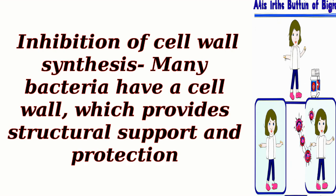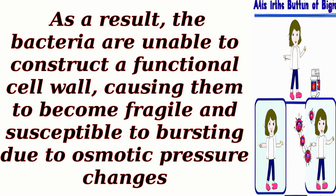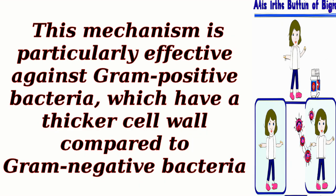Inhibition of Cell Wall Synthesis: Many bacteria have a cell wall, which provides structural support and protection. Antibiotics like penicillin and cephalosporins inhibit the enzymes involved in the synthesis of the bacterial cell wall. As a result, the bacteria are unable to construct a functional cell wall, causing them to become fragile and susceptible to bursting due to osmotic pressure changes. This mechanism is particularly effective against gram-positive bacteria, which have a thicker cell wall compared to gram-negative bacteria.